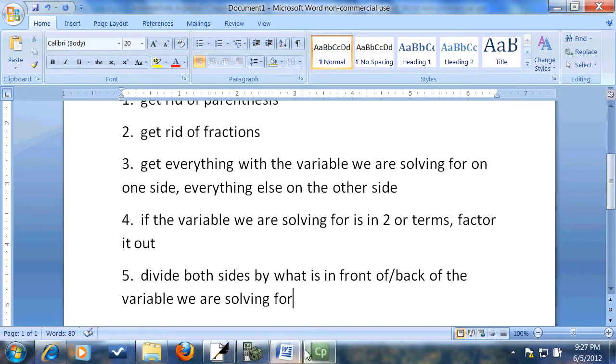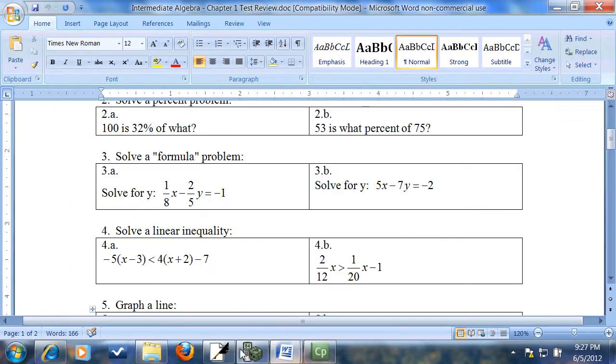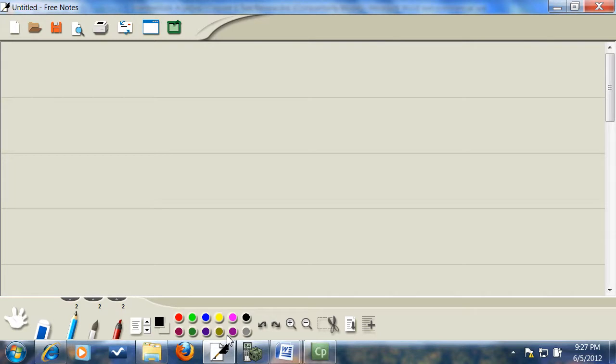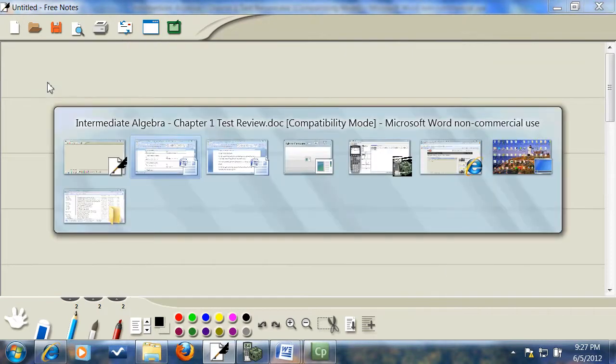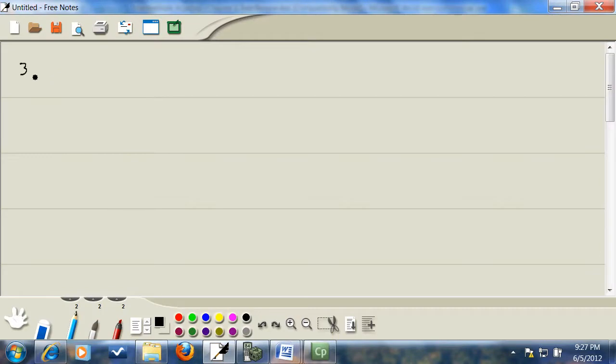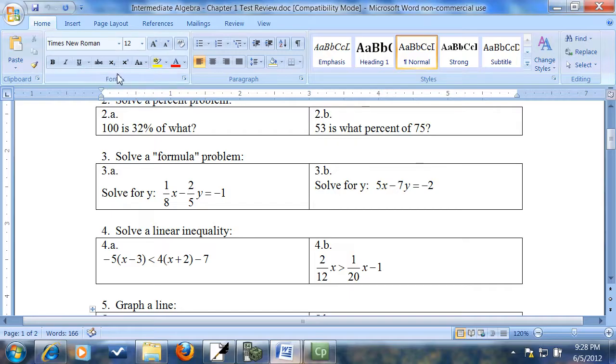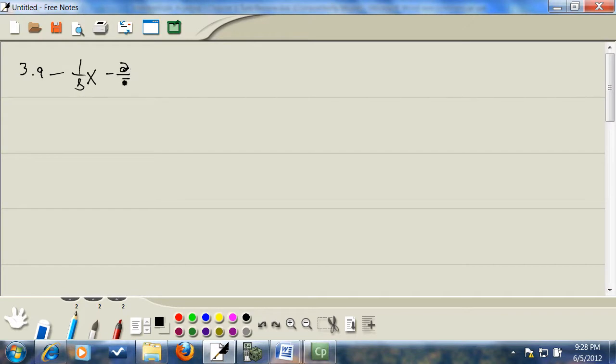So we're going to go through these five steps in solving this problem. There we go. So this is on 3A. And we got one-eighth x minus two-fifths y equals negative one.